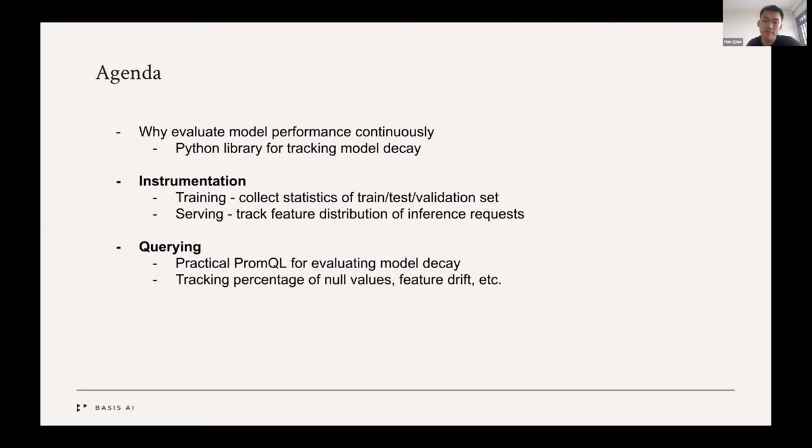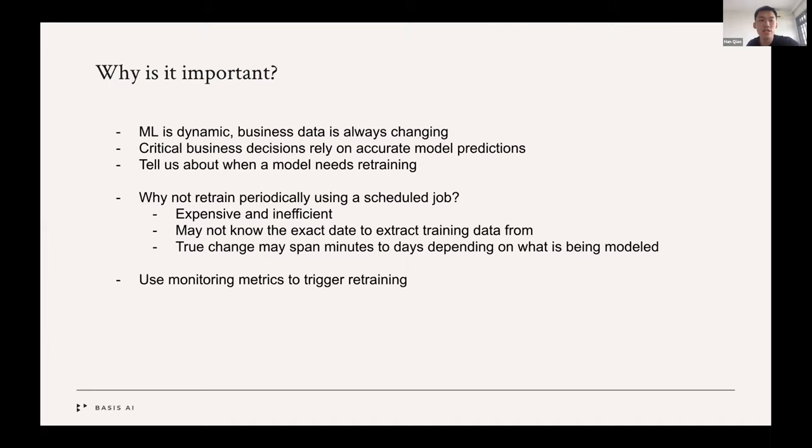So why is this problem important? Because machine learning is a very dynamic problem. The business data that your model is trained on is always changing. And since business decisions rely on accurate model predictions, we would really like to know when your model needs retraining so that they can capture the newest trends in the business data.